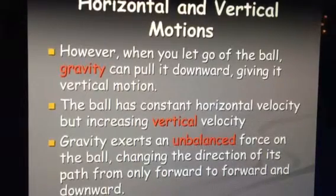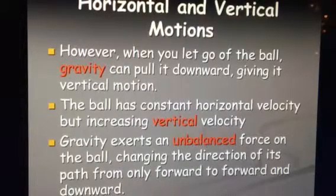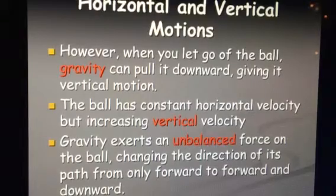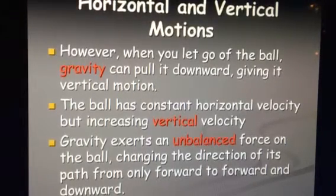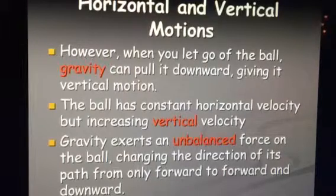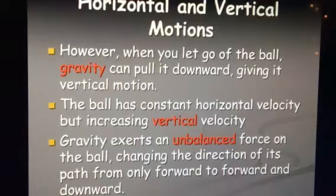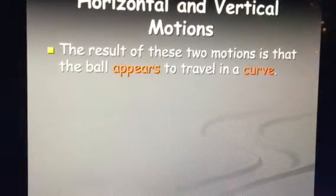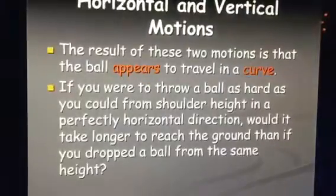The scalar would be just speed, but because we're putting a direction to it, it is going to be a vector. The horizontal motion is where you're throwing the ball forward. Gravity is obviously pulling it down, causing that vertical velocity to also increase. That's where we get those two components from. As a result of these two motions, the ball looks like it's following a curved path.